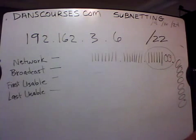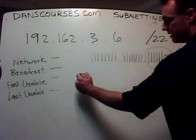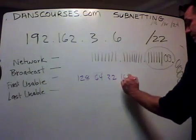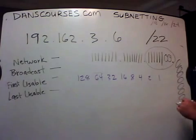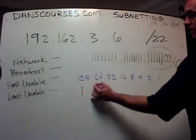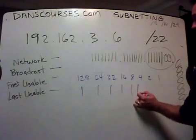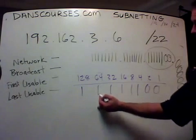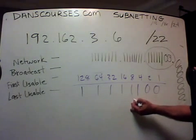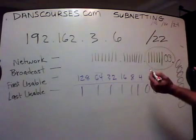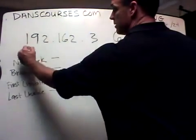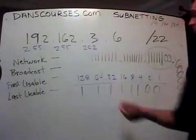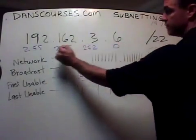You have to know the place values of the eight bits in binary. The place values are 128, 64, 32, 16, 8, 4, 2, and 1. So we've got one, one, one, one, one, one, zero, zero. If we add that up, it's a 252.